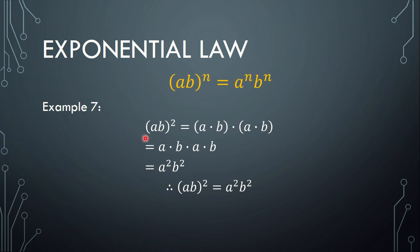Example 7: if we have (ab) squared, it means we multiply a times b, two times. When we open the bracket, we have a times b, times a times b. This gives us a times a, which is a squared, and b times b, which is b squared. So (ab) squared equals a squared times b squared — we can simply distribute the power to the bases.